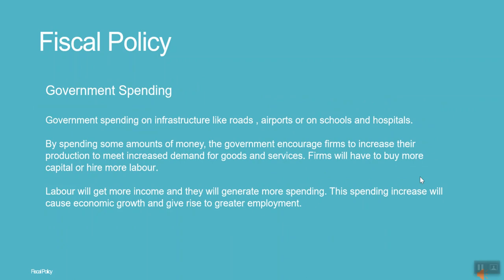Government spending is another fiscal policy tool. Most government spending is on infrastructure like roads and airports, or on schools and hospitals. By spending money, the government encourages firms to increase production to meet increased demand. Firms buy more capital or hire more labor. Labor gets more income and generates more spending, causing economic growth and greater employment.